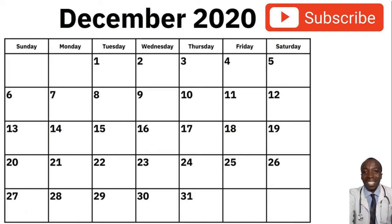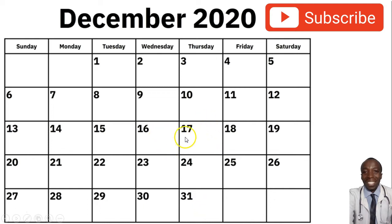To summarize the ovulation calculator for a 35-day cycle: when you have a 35-day cycle, what is very important to note is to simply look for the 14th day from the first day you saw your periods.